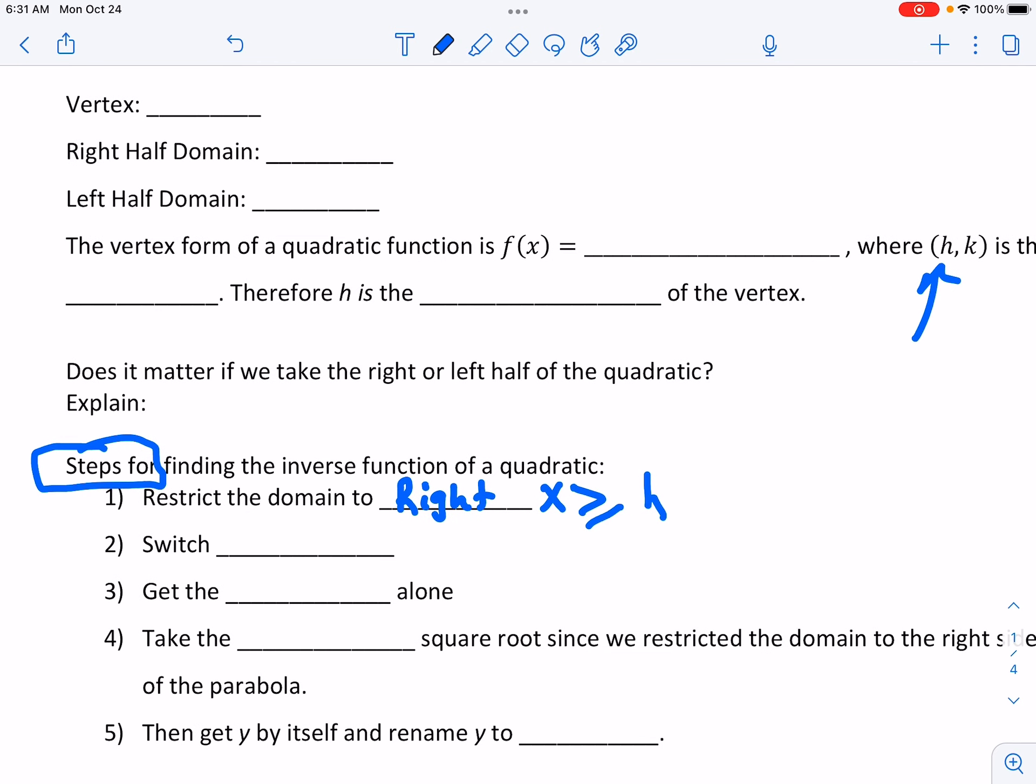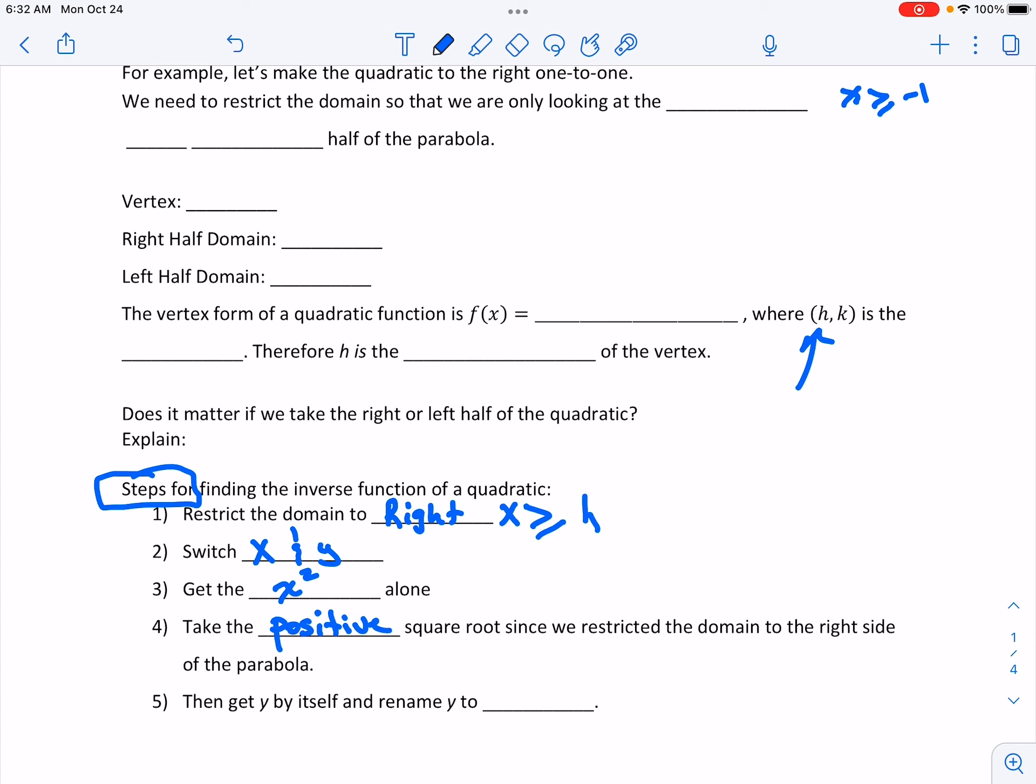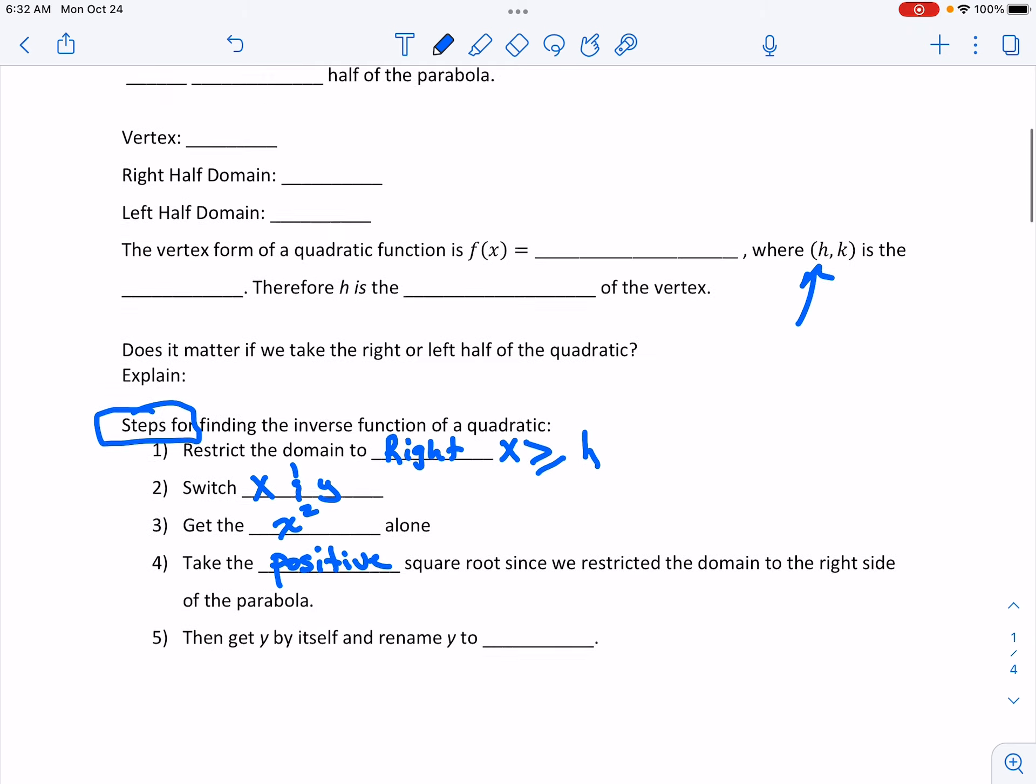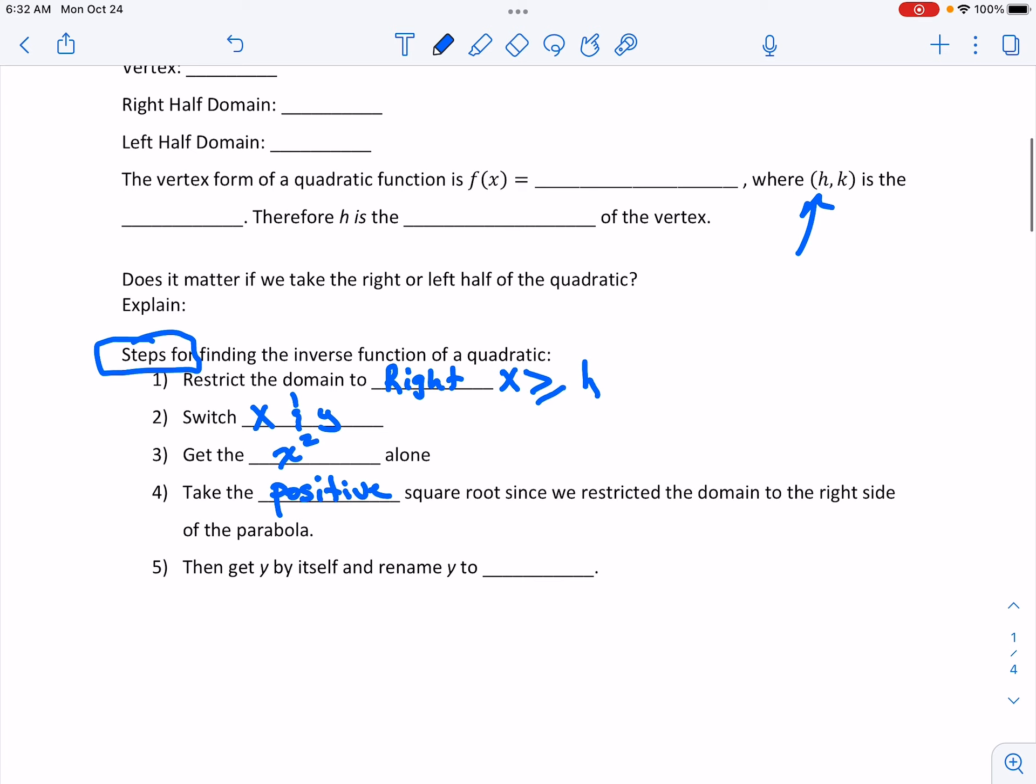We switch the x and y, you get the square value or the power by itself. Then we take the square root, the positive square root. Since we're restricting it to the right-hand side we'll only have the positive. Then we get y by itself and rename the y to f inverse of x.